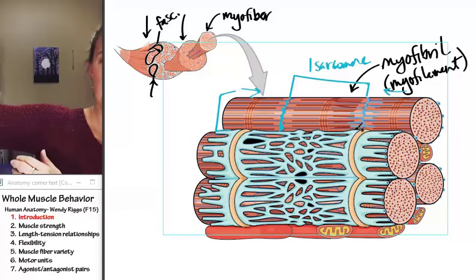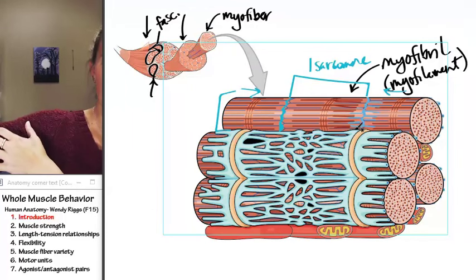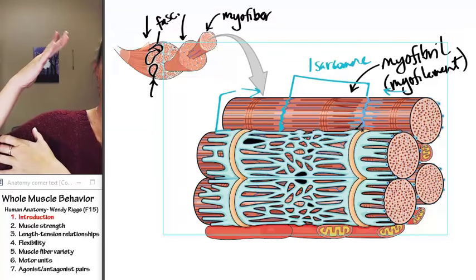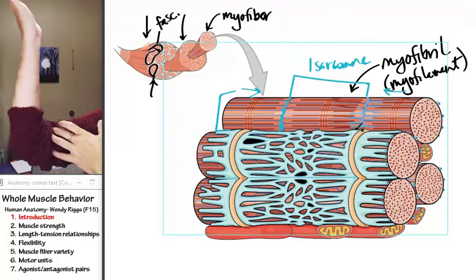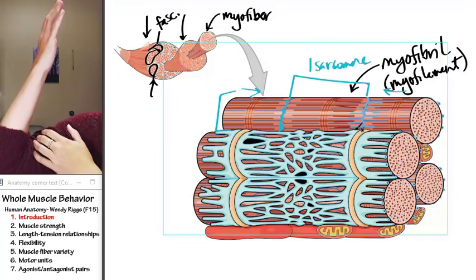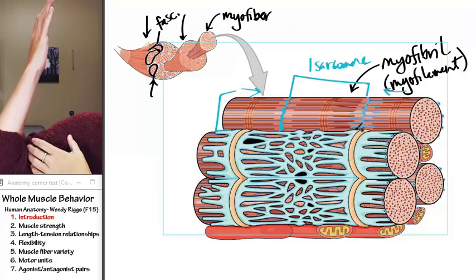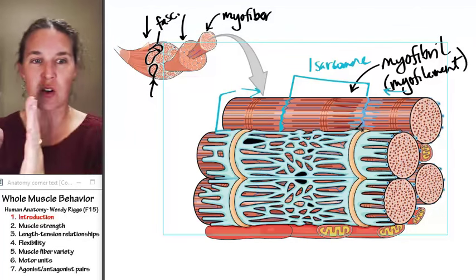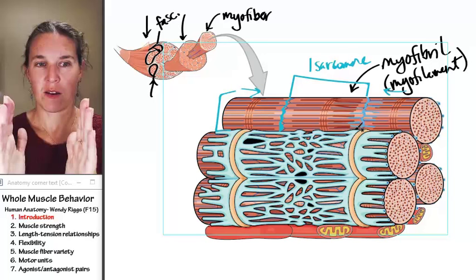That my massive biceps brachii right here, when I flex my forearm, you can barely see. I can see it. How's that? Look, I'm flexing my massive biceps, flexing my forearm, and I can feel the muscle shortening. It's shortening because my sarcomeres are going like that.